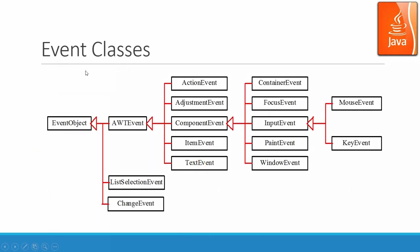Before we dive into these event classes, we must know that event-driven programming is a new programming paradigm. It is different from object-oriented programming or structural programming. Event-driven programming and the GUI make the stream package so robust. It is different from the procedural programming used in object-oriented or structural programming that we mentioned in AP Computer Science or the Java programming essentials course.